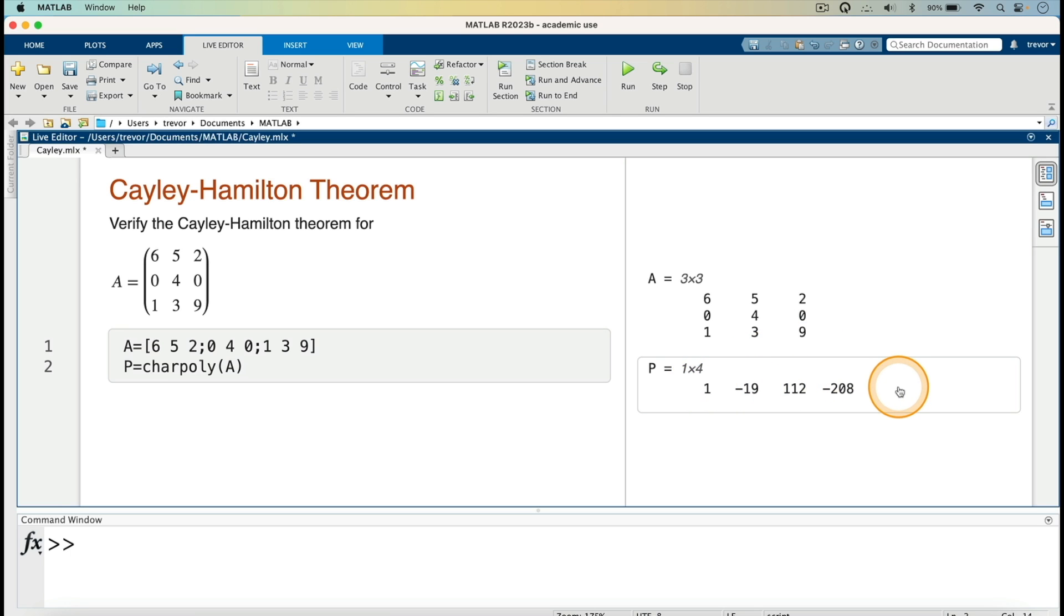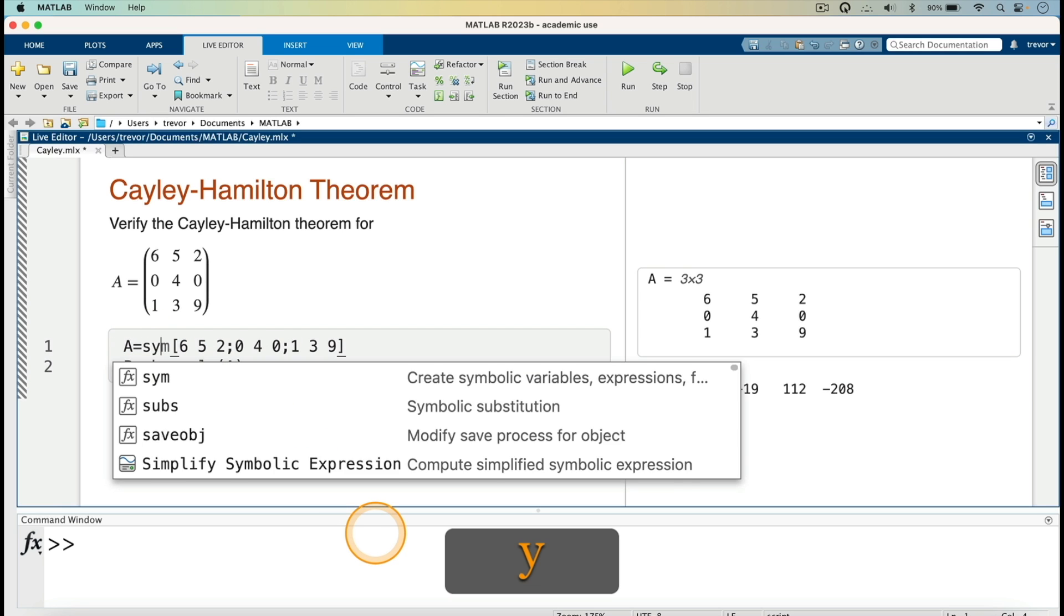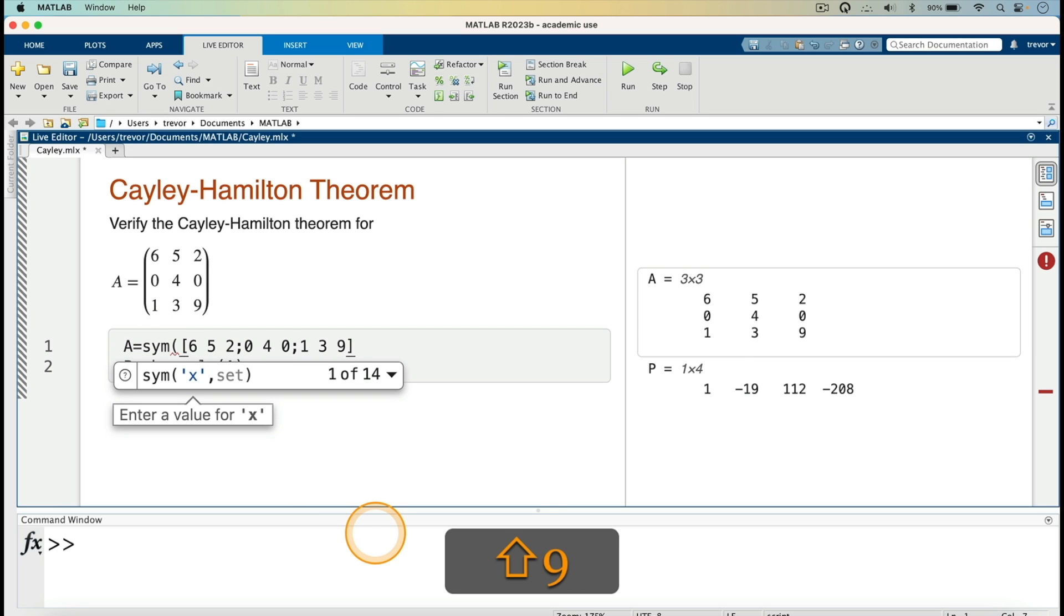The characteristic polynomial here is just given as the coefficients of the polynomial. But if we want the polynomial itself, we can just rewrite this matrix here as a symbolic matrix. So I can just do that, so sym, open parenthesis, A, then close parenthesis.